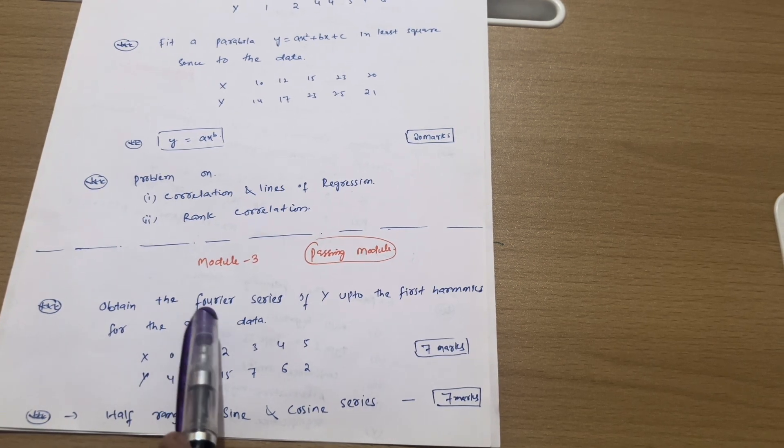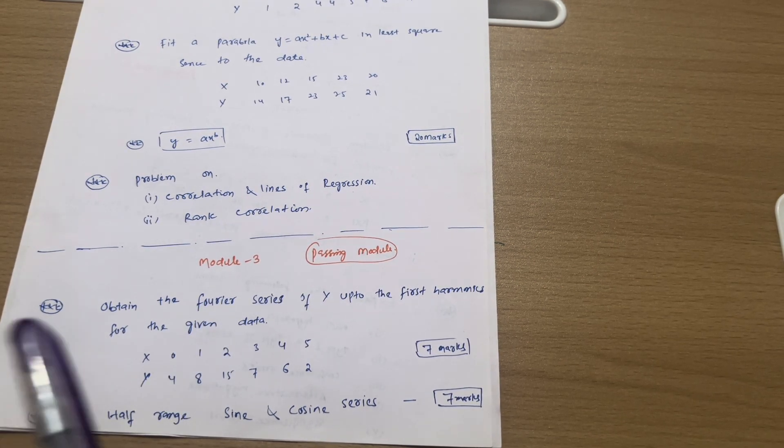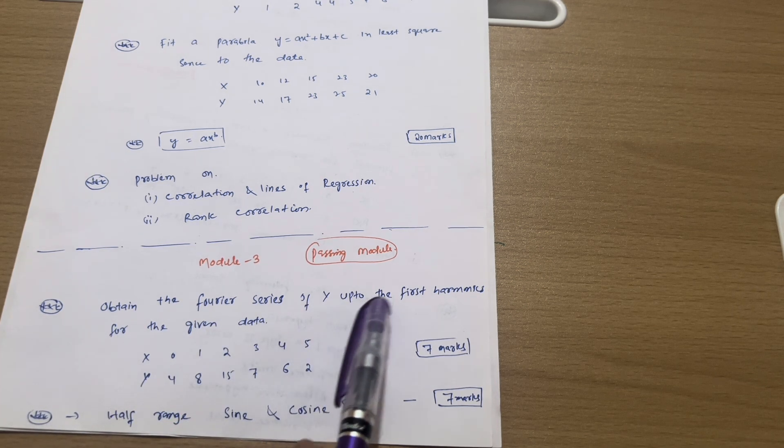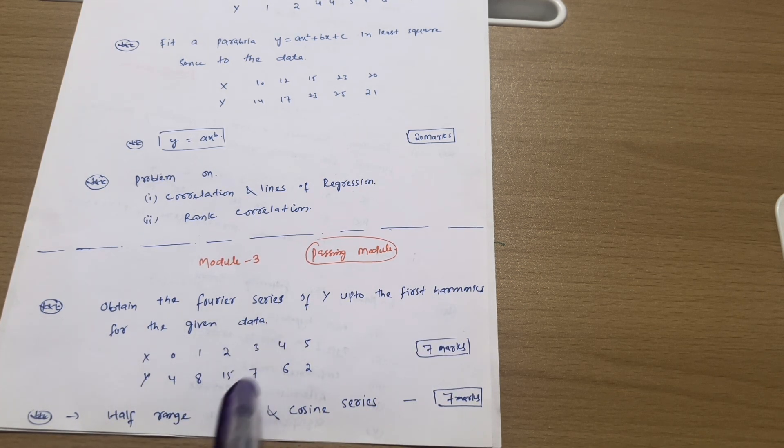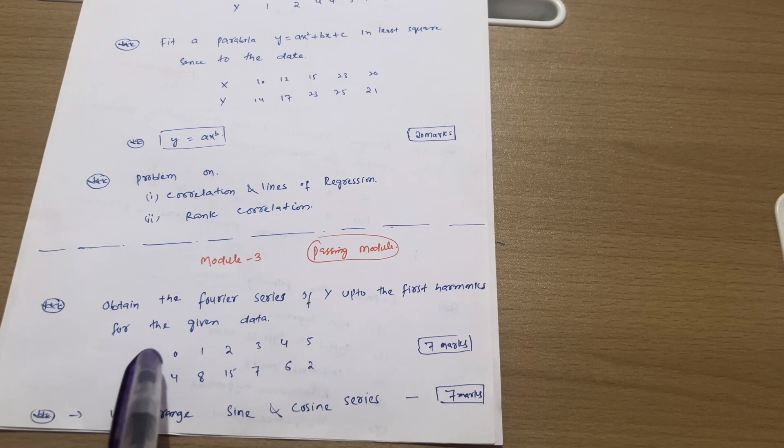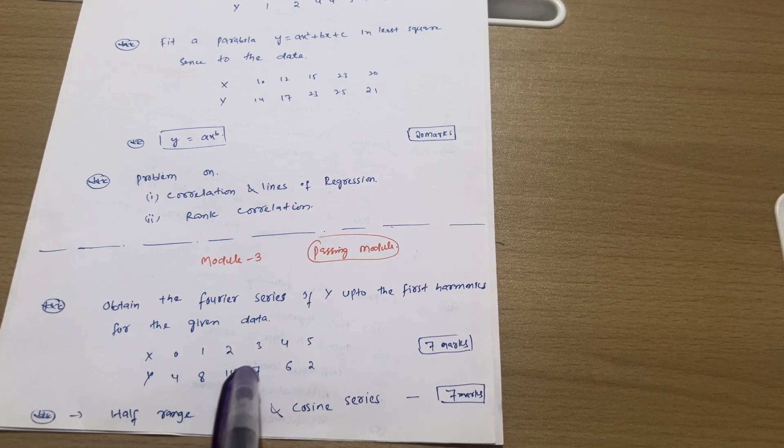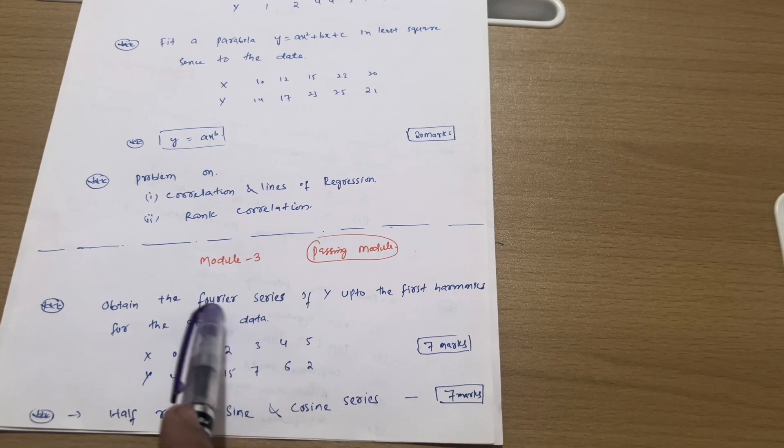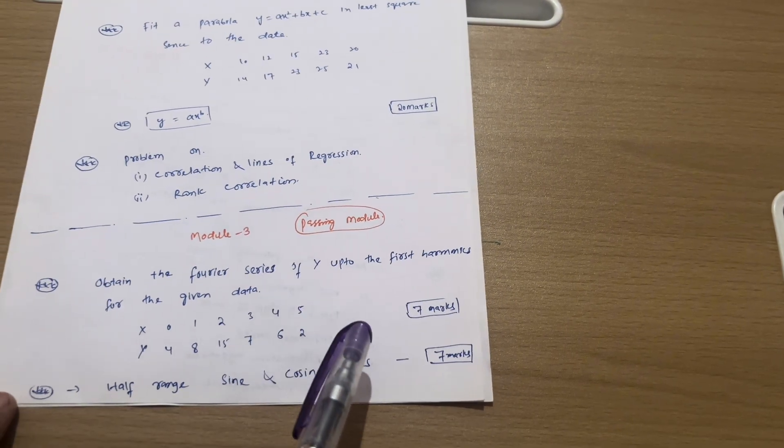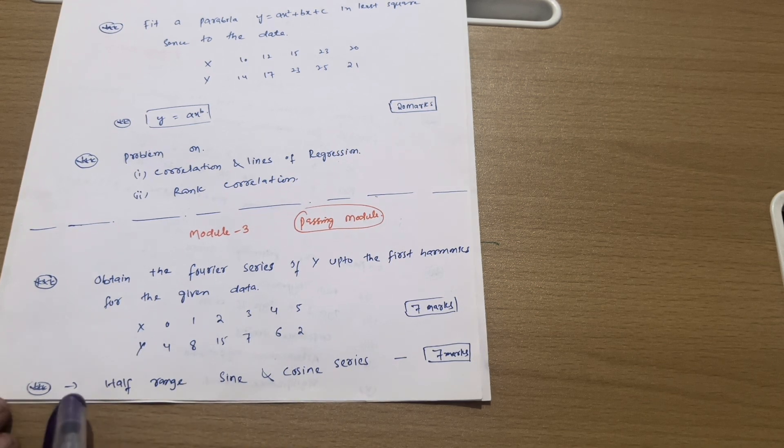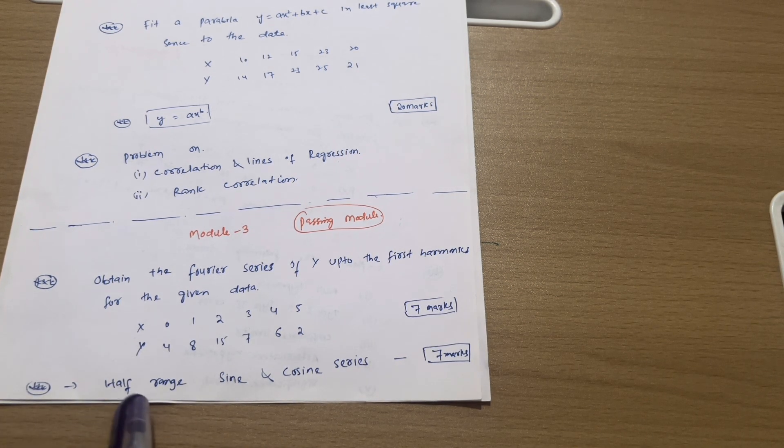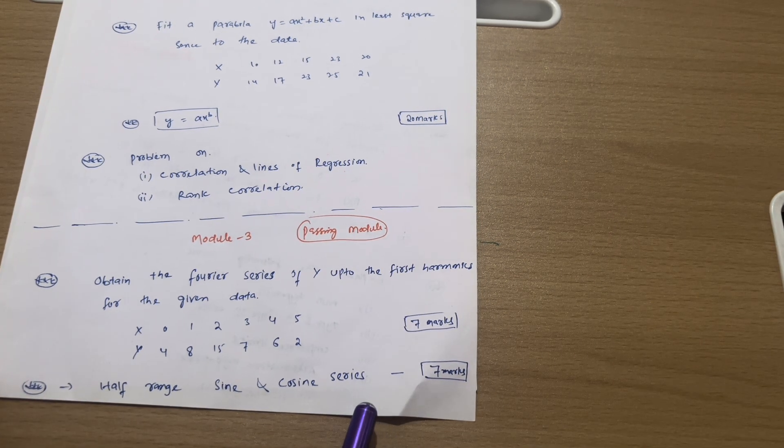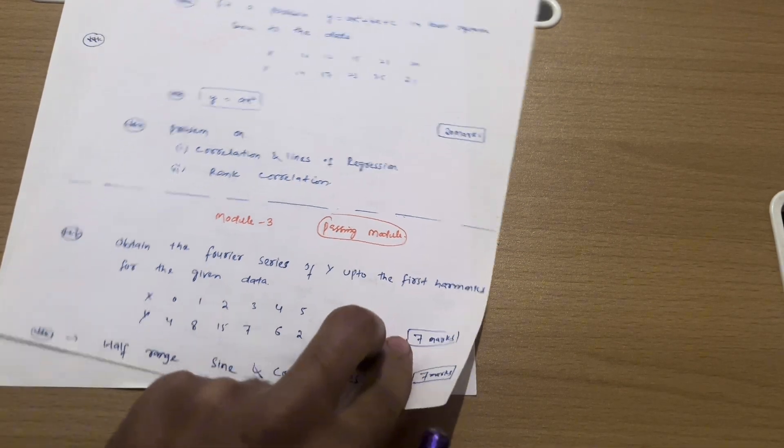Here we have first of all seven marks which is the simplest with little bit calculation. Obtain the Fourier series of y up to the first harmonics for the given data. Data will be given like x: 0, 1, 2, 3, 4, 5 and y: 4, 8, 15, 7, 6, and 2. There will be changes in this data only. This is a sure question which will be asked in the examination. So this is seven marks you can easily get. Next we have another topic that is half range sine and cosine series also seven marks question. Try at least three to four questions from this concept. So this is again seven marks.